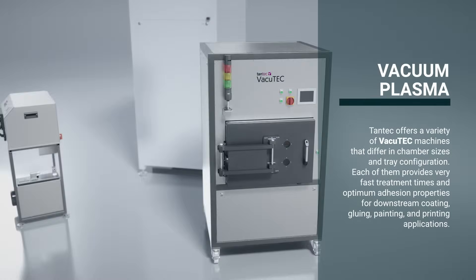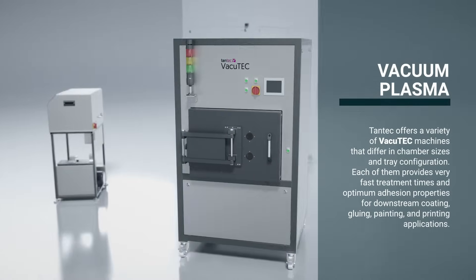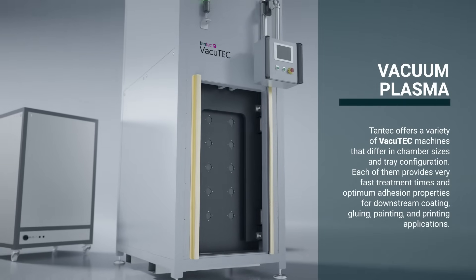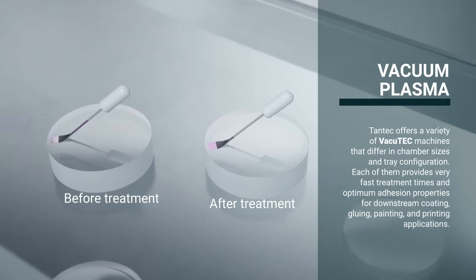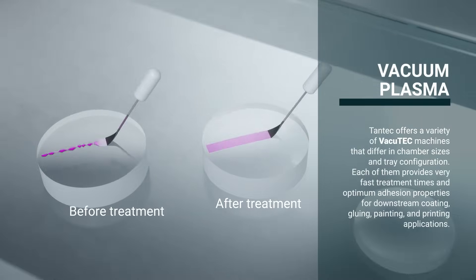Tantec offers a variety of Vacu-Tec machines that differ in chamber sizes and tray configuration. Each of them provides very fast treatment times and optimum adhesion properties for downstream coating, gluing, painting, and printing applications.